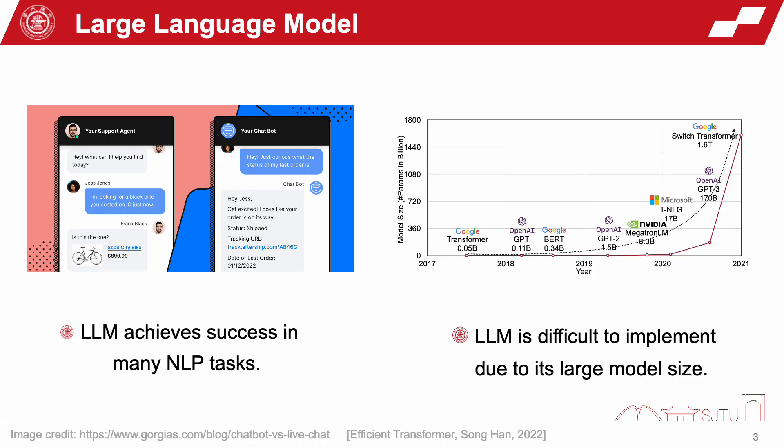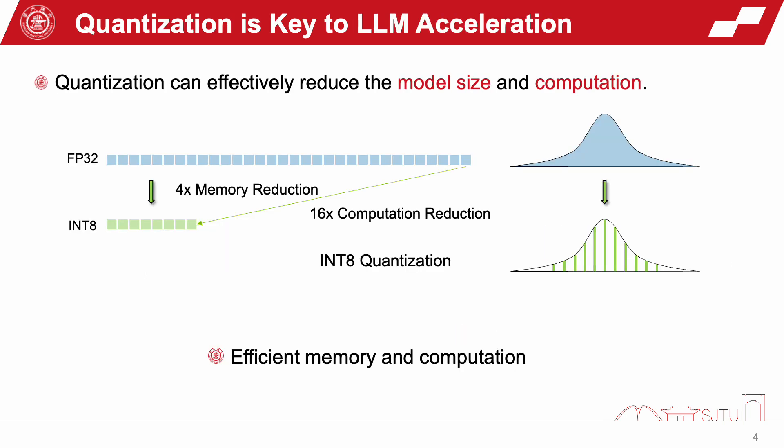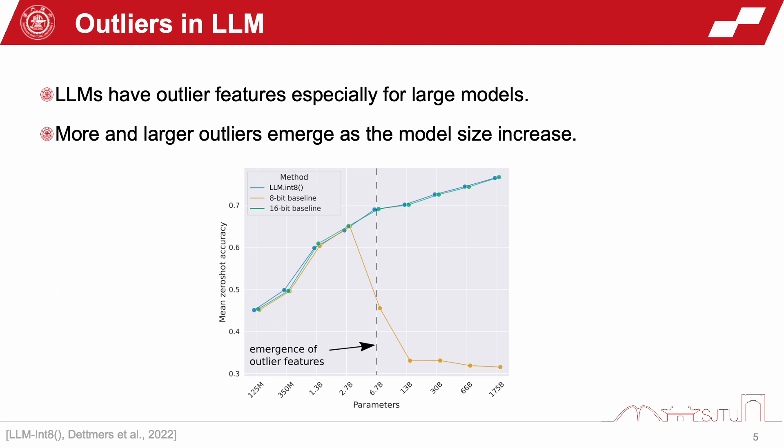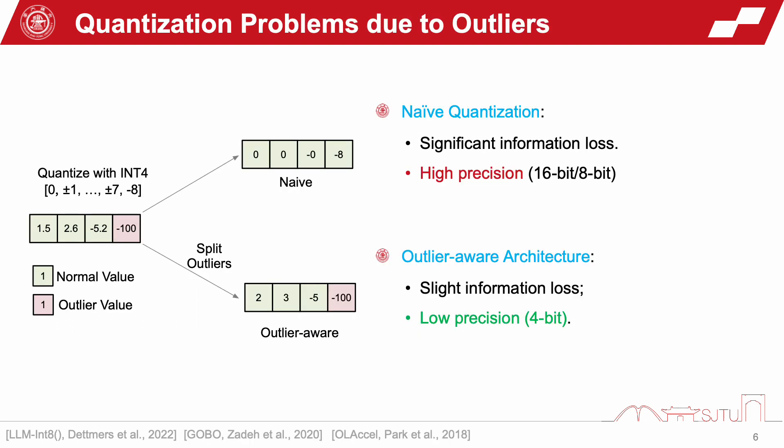Large language models have achieved success in many NLP tasks. However, it's difficult to deploy them due to their large model size. Quantization is one promising way to reduce model size and computation. However, there are many outliers in LLMs, and outliers will cause significant problems for quantization, such as significant information loss. Outlier-aware architectures have been proposed to solve these problems.